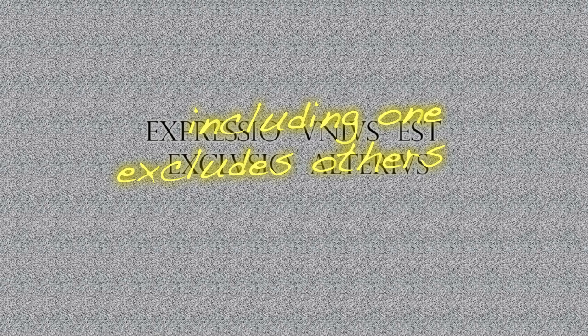How can ejusdem generis — include things of the same kind — be reconciled with inclusio unius exclusio alterius — mentioning one thing excludes things not mentioned, even if of the same kind? The last pursuit of that very good question would take us far afield. Let it suffice to say that none of these canons of construction purports to be conclusive. Ultimately, the issue is always one of the drafter's intent. Canons serve as tools to help us uncover what the lawmaker meant by the words chosen.